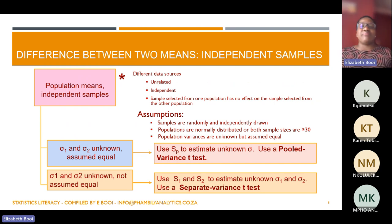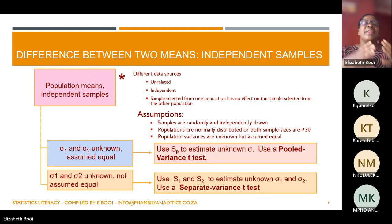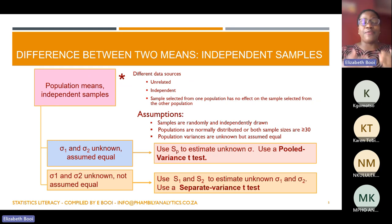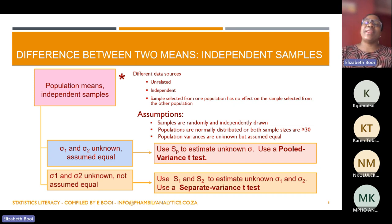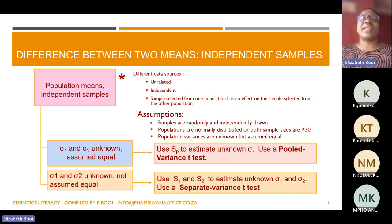Independent samples are samples that are unrelated to one another; they are independent, and one does not influence the other. When you do hypothesis testing for independent samples, there are assumptions that must be met. Number one: the sample needs to be randomly and independently drawn. Number two: the population needs to be normally distributed. If it's not normally distributed, there are non-parametric tests you can do, but those are not part of your syllabus.